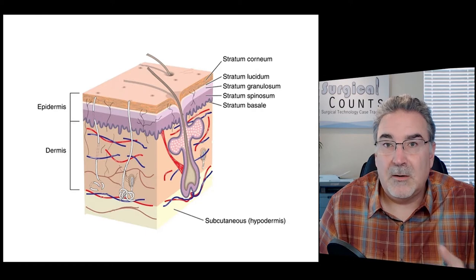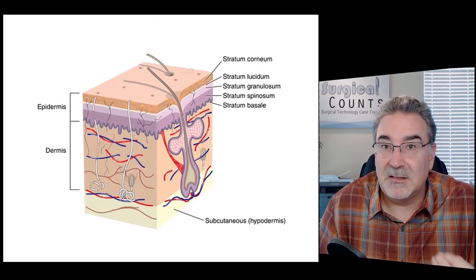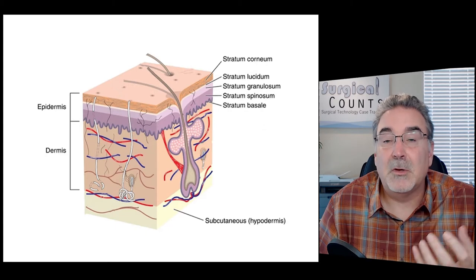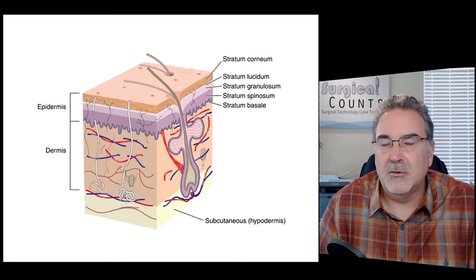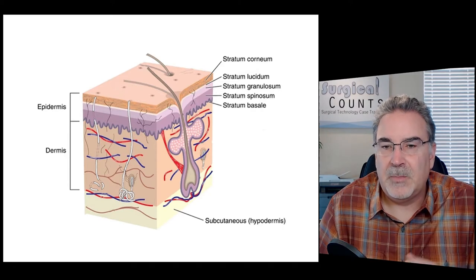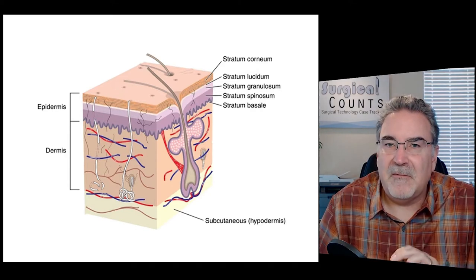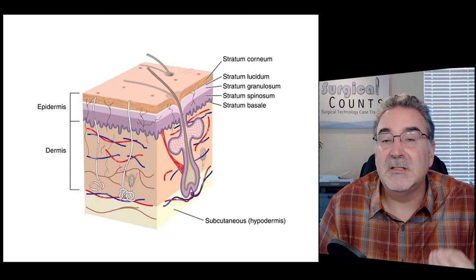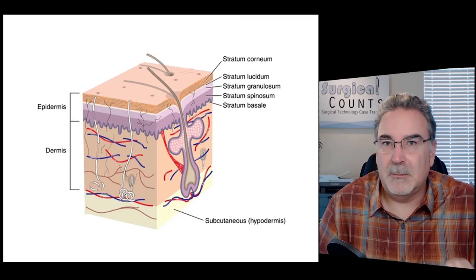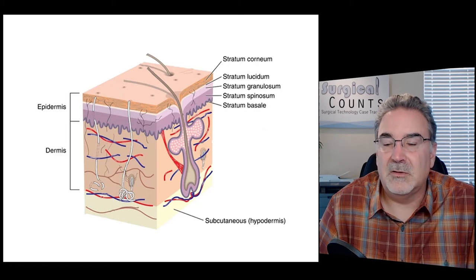The dermis is where not only the blood vessels, but also all the sweat glands and sebaceous glands live. That's also where the hair follicles exist, where the hair grows from. Just below the dermis, we have a fatty layer, sometimes known as the hypodermis, or usually known as the subcutaneous, or sub-Q, as you'll hear it often at surgical sites.